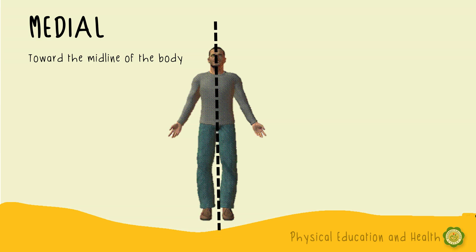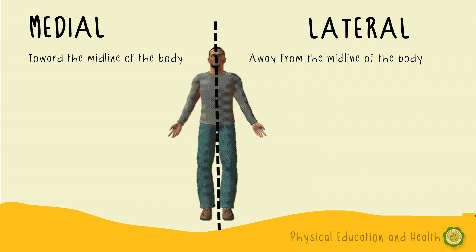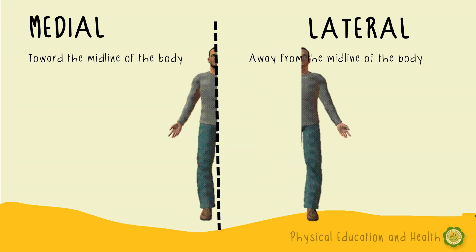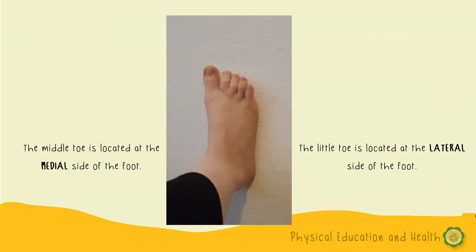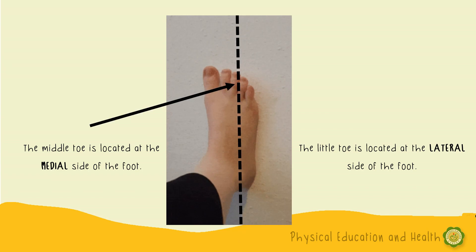Ano nga ba si midline? Midline is an imaginary line that cuts the body in half vertically — nasa gitna ng ating katawan. Lateral means away from the midline of the body — malayo siya sa ating midline. Example: the middle toe is located at the medial side of the foot because the middle toe is on the midline. For lateral, the little toe is located at the lateral side of the foot because the little toe is further away from the midline. We can also say that the middle toe is medial to the little toe, and the little toe is lateral to the middle toe.